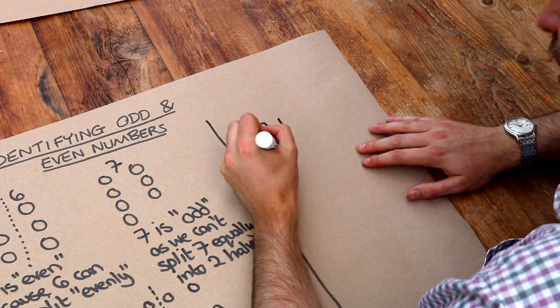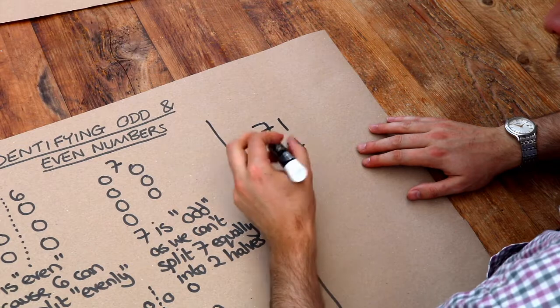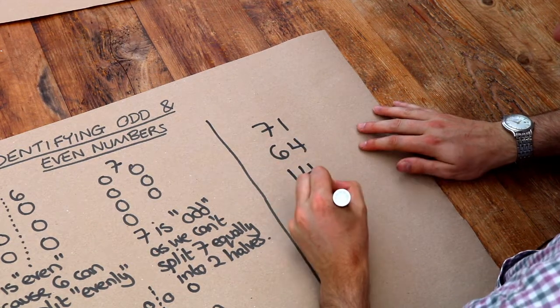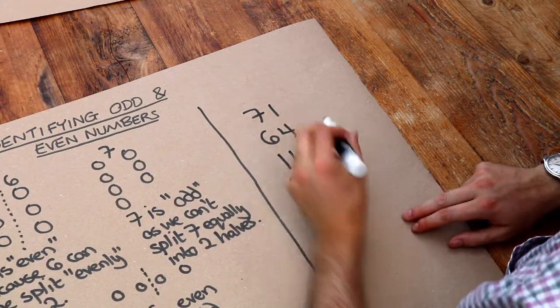So if I give you a few examples, let's say we've got 71, 64, 14, and 26, and 35.